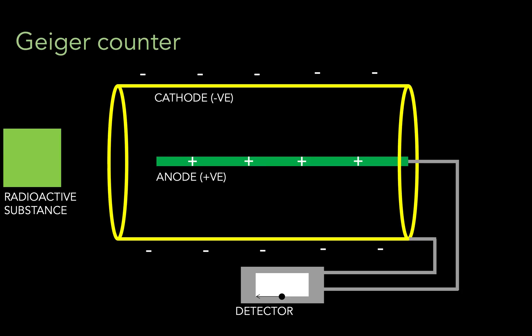And the Geiger counter is basically just a tube filled with air, in which there is a positively charged bit, called an anode, and a negatively charged bit, called a cathode.